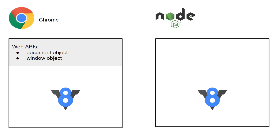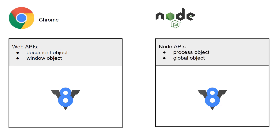The V8 engine has no idea about them, and that makes sense when looking at the Node.js V8 engine, because it doesn't need to know anything about the window object or the document object since it's running outside of the browser. Node.js actually provides its own APIs — there are similar objects available such as the process object and the global object — and these form part of the Node.js runtime.